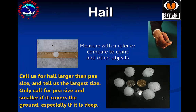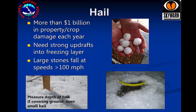Hail is an element of severe weather which can cause damage and even injuries. Stay indoors and estimate hail size while hail is falling. When it is safe to go outside, you can measure the largest hailstones with a ruler or compare them to an object such as a coin — please don't use marbles, as they can vary in size. We would like to be called when hail is larger than pea size. Smaller hail can be reported if it is covering the ground and causing slippery travel on roads. Hail in Northern California can sometimes reach several inches deep and the depth should be measured with a ruler. Hail does quite a bit of damage each year, damaging crops, vehicles, and even home windows and roofs when large — large hailstones can travel 100 miles per hour or more.